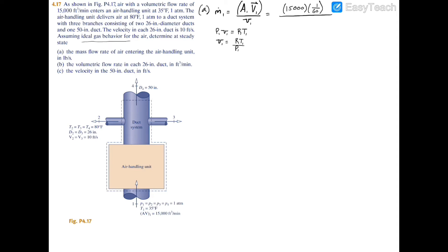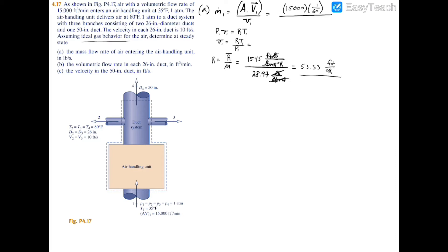First we calculate R, the gas constant, which equals the universal gas constant divided by the molar mass. In English units, the universal gas constant equals 1545 ft·lb / (lb-mol·°R), divided by 28.97 lb/lb-mol, the molar mass of air. Canceling out pound-moles gives units of ft/°R, and plugging into a calculator gives R = 53.33 ft/°R.